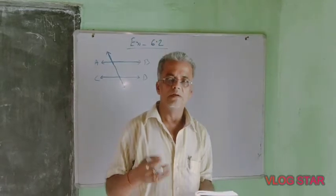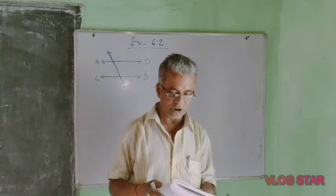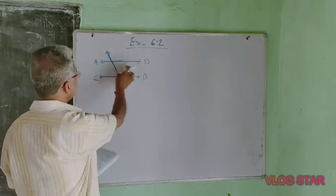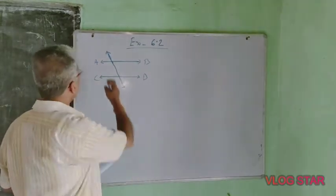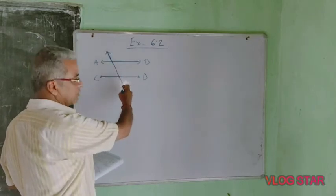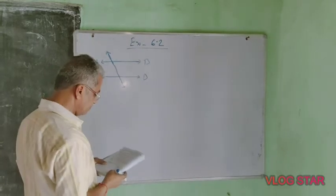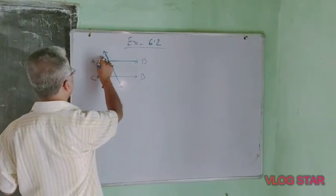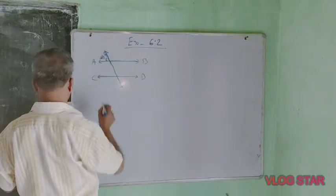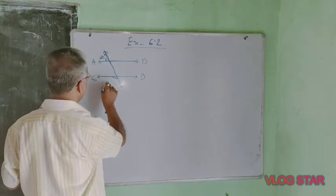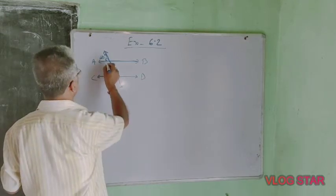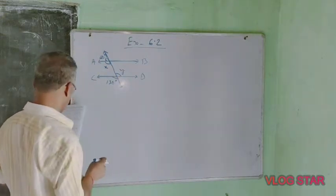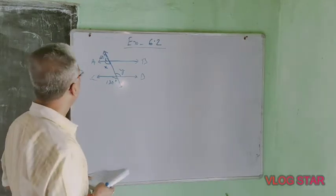Class 9, Lines and Angles, Exercise 6.2, Question number one. In the figure given, AB and CD are parallel straight lines, and another straight line intersects the two parallel lines. You are given this angle as 50 degrees, this is 130 degrees, this is termed as x, and this is termed as y. You have to find x and y.